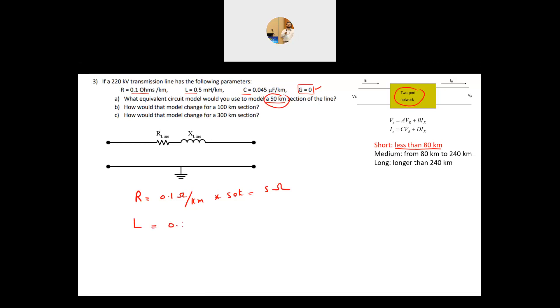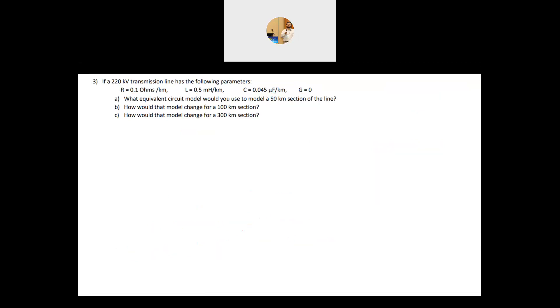Your L is equal to 0.5 millihenry per kilometer times the 50 kilometer, and this will give me 0.025 Henry, but this is X. Your X of the line is equal to omega L. Assume the frequency is 60 hertz, so it's 2 pi F times L, 0.025, and this will give me 9.42 ohm.